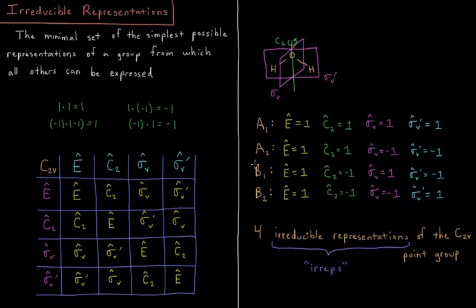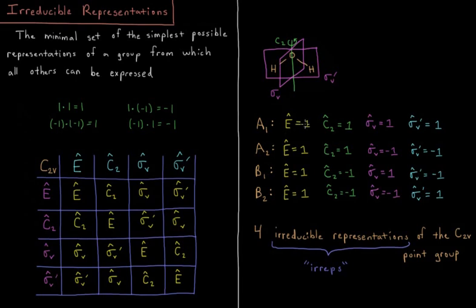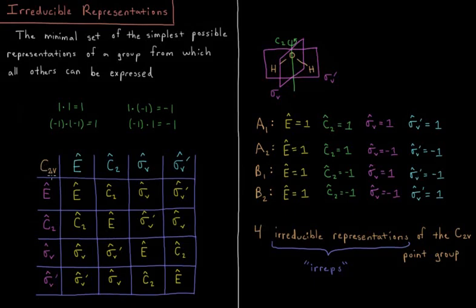There are two more representations: B1 and B2, each with their own definitions. Together, these four are the irreducible representations — or irreps — of the C2v point group. There is no simpler set of representations for these four operators that is consistent with the group multiplication table. There are four operators and four irreps. Next, we'll move on to character tables, which list the definitions of each irrep for each of the individual point groups.